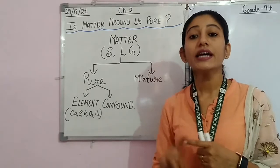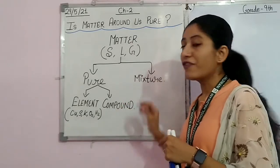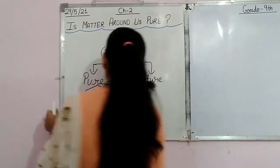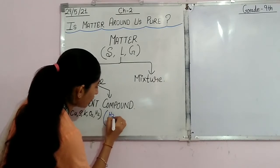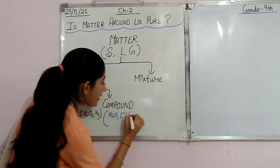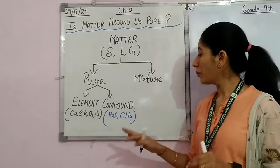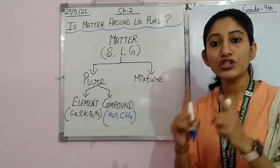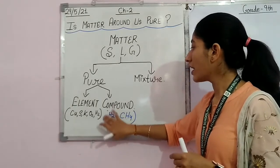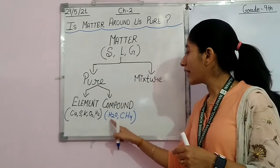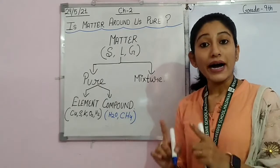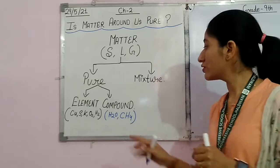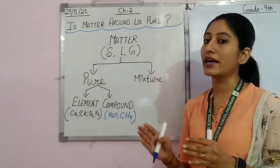For breaking a compound, we need some special chemical efforts. Whenever we pick the compound, the composition is uniform everywhere. For example, we have water — H₂O — it is a compound. From wherever you pick the water molecules, the composition is always H₂O. That's why it is pure, because the composition always remains the same. We cannot break H₂O into its constituents by physical methods.